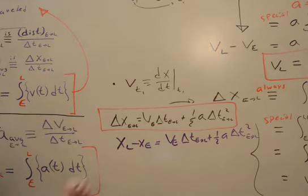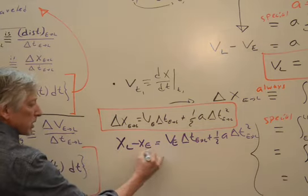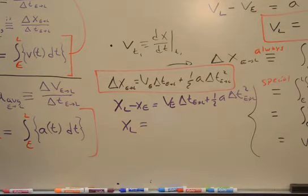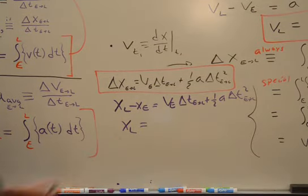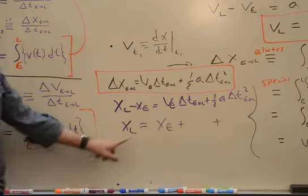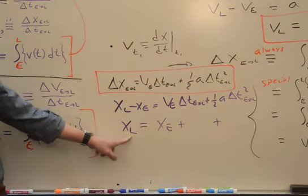Now, here's how a lot of people write it. I can move, of course, the earlier position over here, so xl is equal to. And you can figure that out. It's x earlier plus and plus. Well, where did I end up?